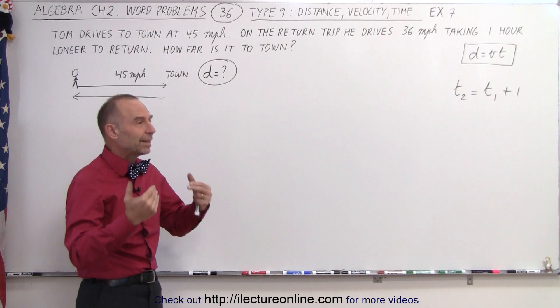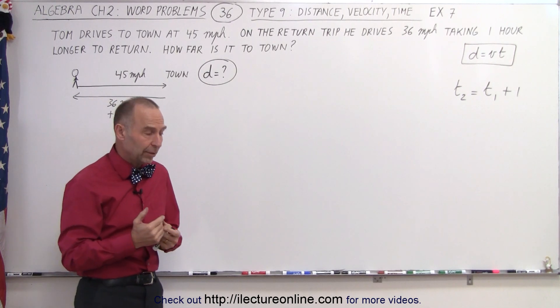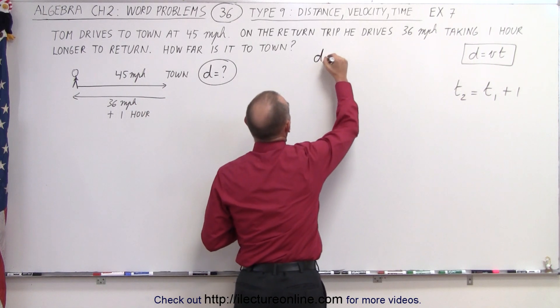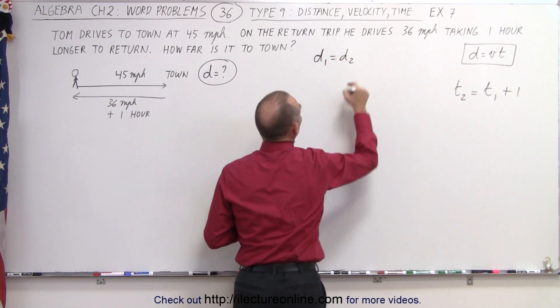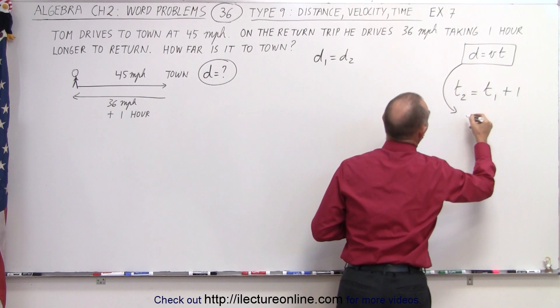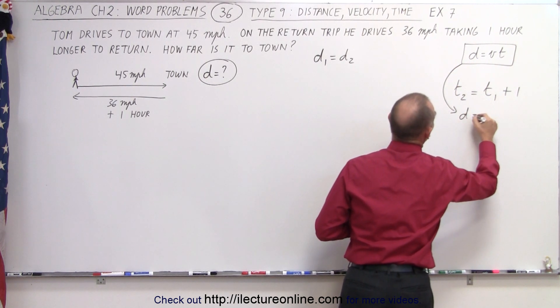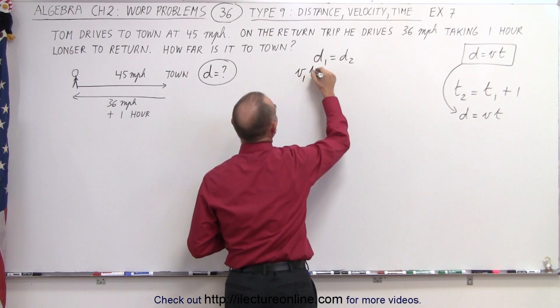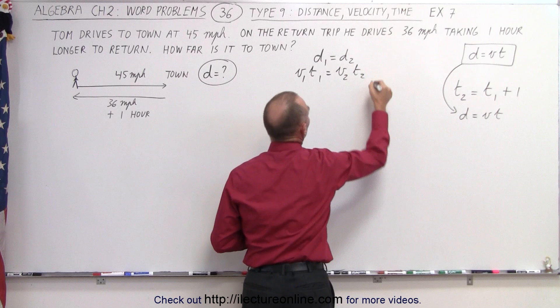In the previous video we realized we did not know the distance to town, and so therefore we started with the equation distance 1 equals distance 2, and then we replaced it by solving this equation for distance. We can say that distance is equal to velocity times time, so therefore we wrote V₁T₁ equals V₂T₂.